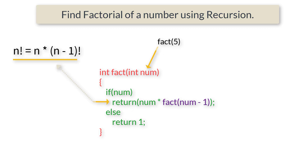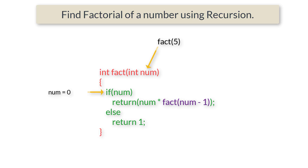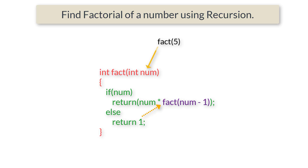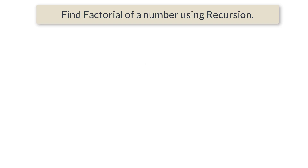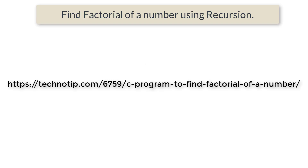We are passing n minus 1 each time, so ultimately the num value will reach 0 at some point. When num is 0, the else block code gets executed and we return 1, because 0 factorial is 1. That value is returned to the calling function, which is fact(0). This is how our recursive function works.